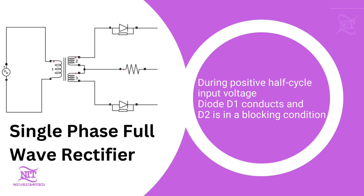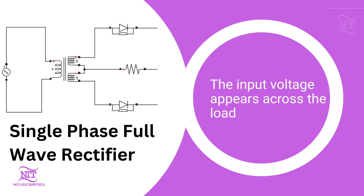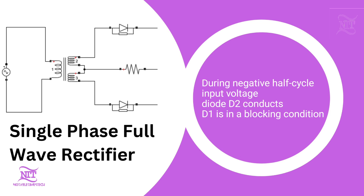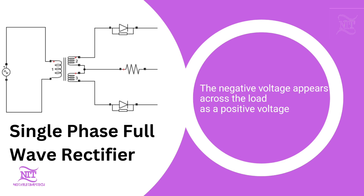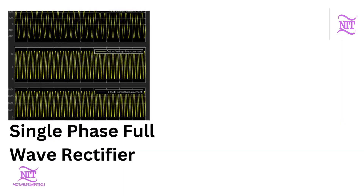During the positive half cycle of the input voltage, diode D1 conducts and diode D2 is in a blocking condition. During the negative half cycle, diode D2 conducts while diode D1 is in a blocking condition. The negative portion of the input voltage appears across the load as a positive voltage.